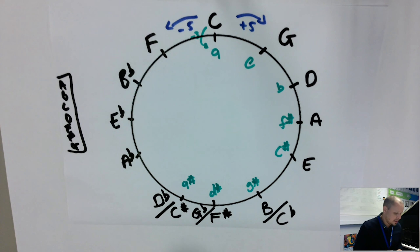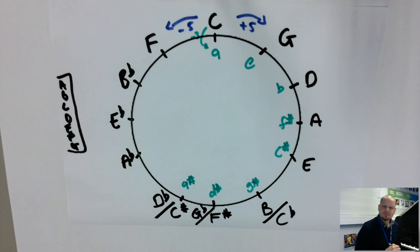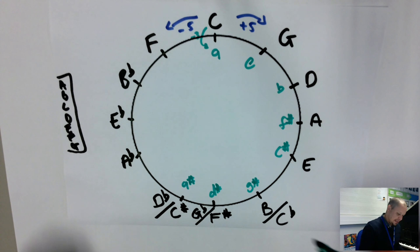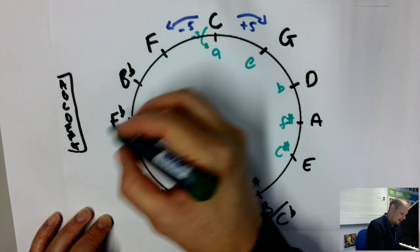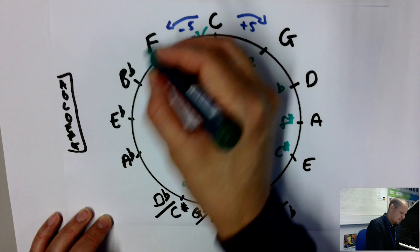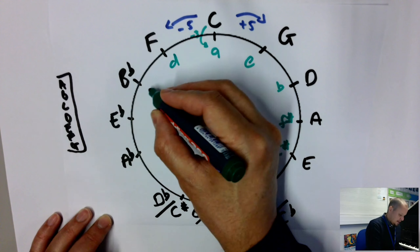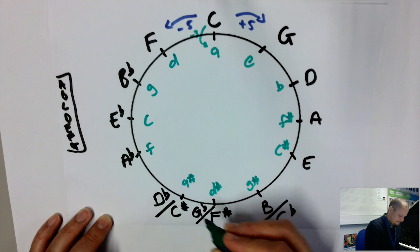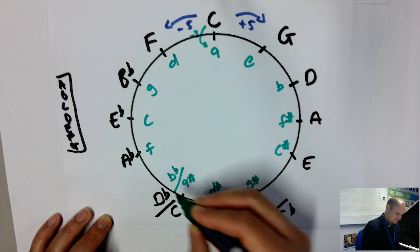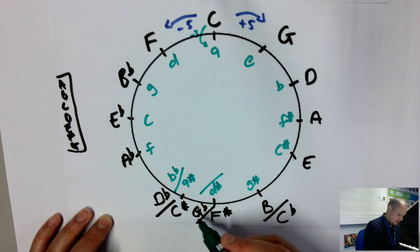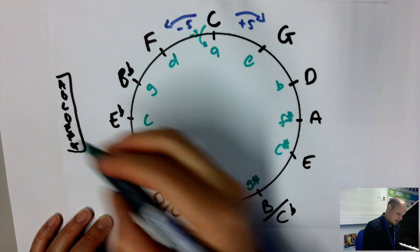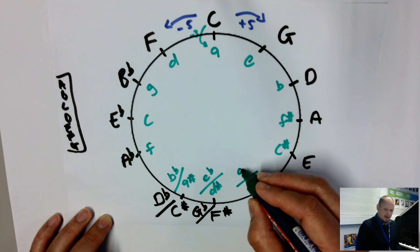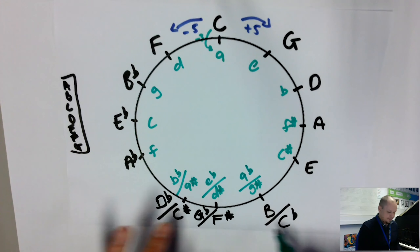So B minor and D major both have two sharps — F sharp and C sharp — and they share the same key signature. We can do the same with the flat keys, counting down three from each: D minor, G minor, C minor, F minor, B flat minor, E flat minor, and A flat minor. There are a couple of enharmonics at the bottom in the minor keys as well.